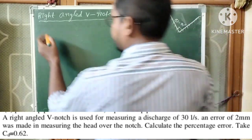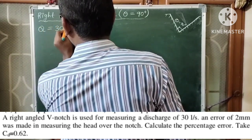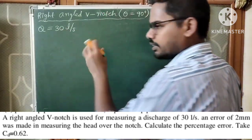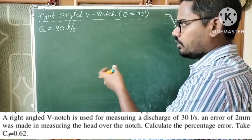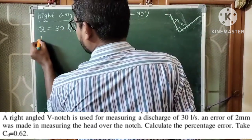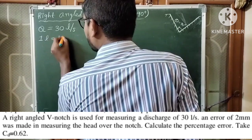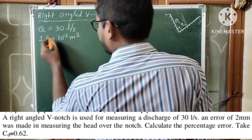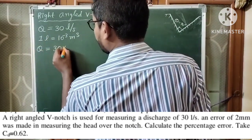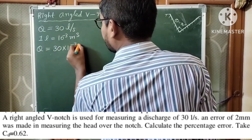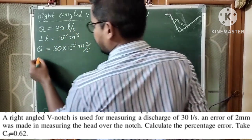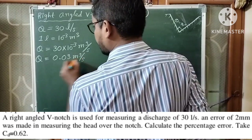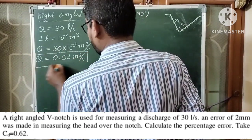The discharge Q is equal to 30 liters per second. Let us convert liters per second into meter cube per second — that is, SI units. Since 1 liter equals 10 to the power of minus 3 meter cube, Q equals 30 into 10 to the power of minus 3, which gives Q equal to 0.03 meter cube per second.